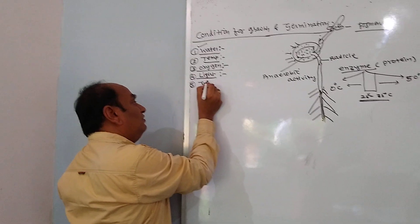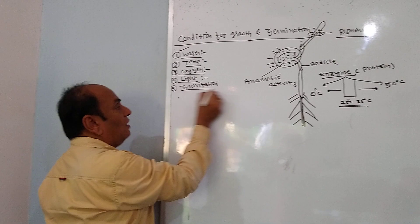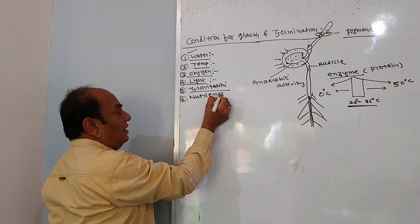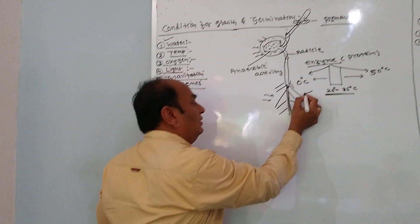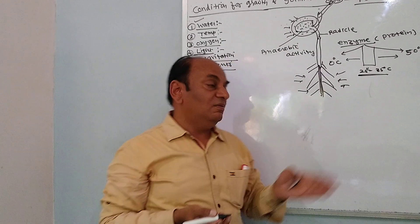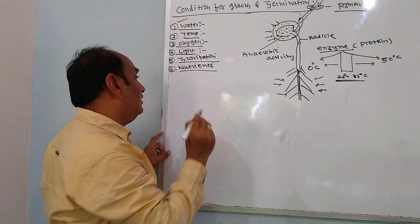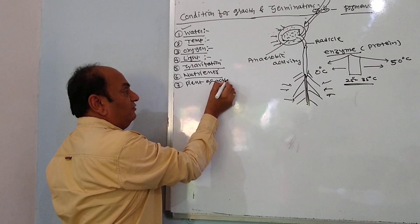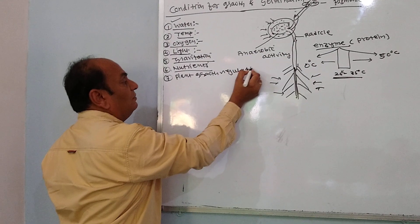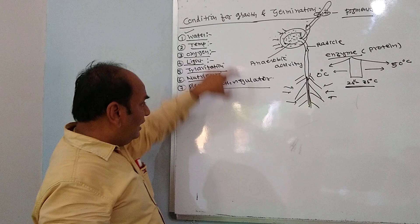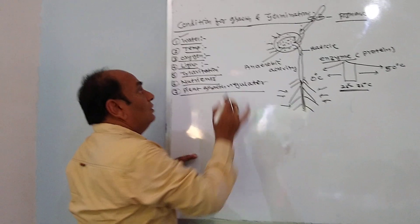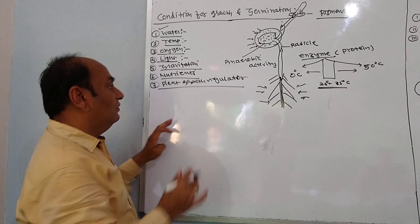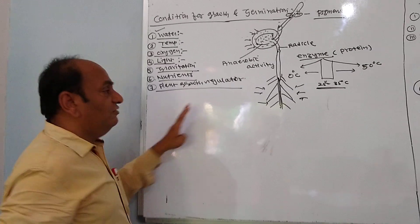After light, gravitational force decides the movement of the root and shoot. Next is nutrients — the plant can grow in soil, but the roots need nutrients. If the soil is fertile, growth will be rapid; otherwise, with no minerals or nutrients, growth will be suspended. Plant growth regulators are also needed. So water, temperature, oxygen, light, gravitational force, nutrients, and plant growth regulators are all essential for growth and germination of seeds.